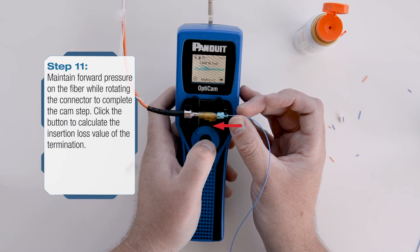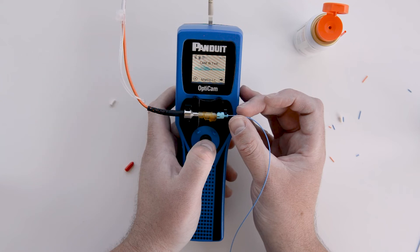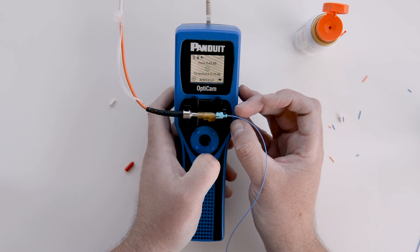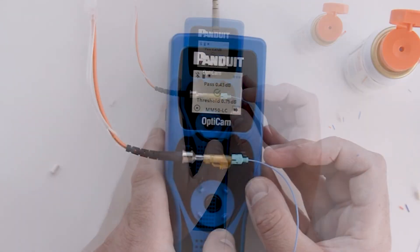At this point, it is important to maintain forward pressure on the fiber as you cam the connector by rotating the body of the connector towards you for a right-handed setup or away from you for a left-handed setup. Once the connector is fully cammed, click the button to perform the insertion loss calculation.